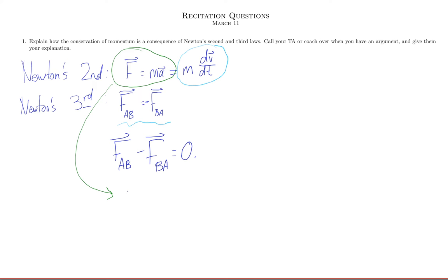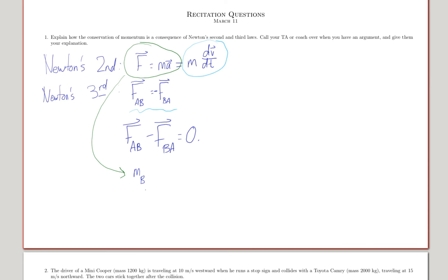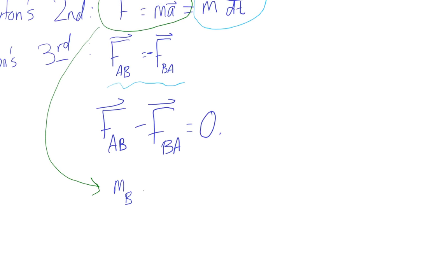So substituting that in, that means that MB times AB, so mass times acceleration, minus MA times acceleration of A is zero.